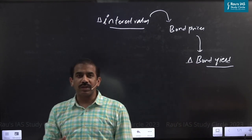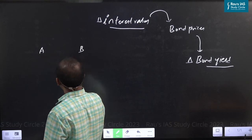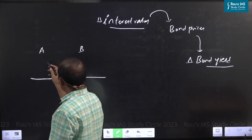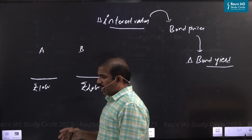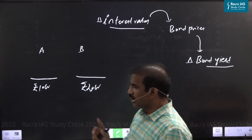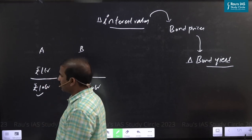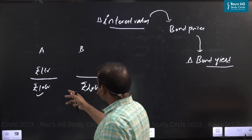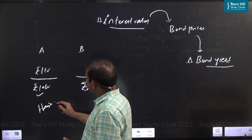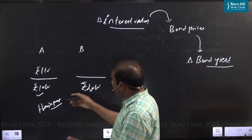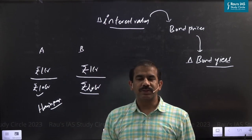For those of you who are not clear with the term yield, let me make it clear with a very simple example. Imagine there are two gentlemen A and B who happen to spend different amounts of money. A invested 10 crore rupees and B invested 20 crore. Both of them happen to invest in a similar kind of asset. This asset that A purchased at 10 crore is paying him 1 crore per annum as returns.